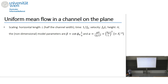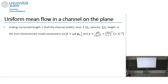On the mid-latitude beta plane — and this also holds for the F-plane — we do some scaling. The horizontal length scale is L, where we solve the problem on a channel of width 2L. The timescale is 1/f_0, velocity scale is f_0*L, and the height scale is f_0^2*H/g. The non-dimensional model parameters are beta and alpha, where alpha is the square of the radius of deformation divided by the square of the half channel width.